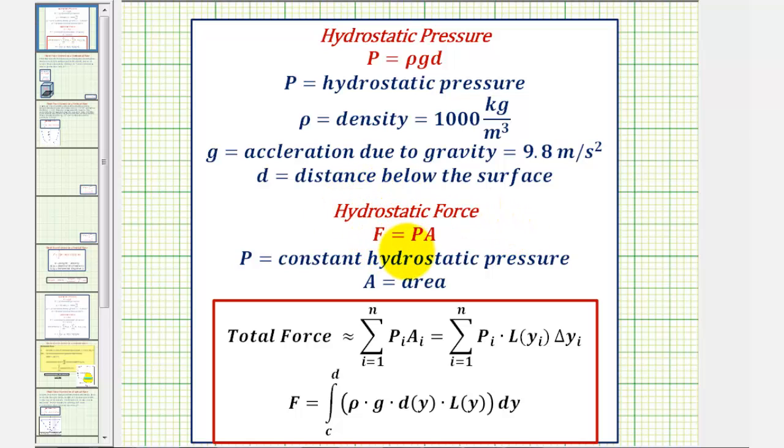Hydrostatic force F is equal to P times A, where P is equal to the constant hydrostatic pressure, and A is equal to the area. And P is equal to density times acceleration due to gravity times d, the distance below the surface.